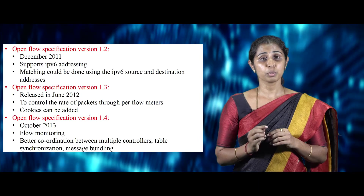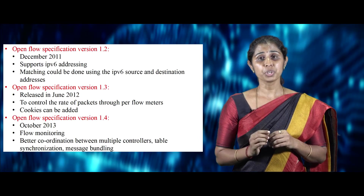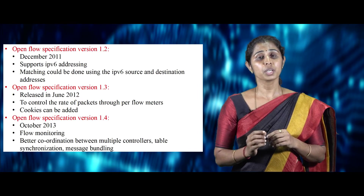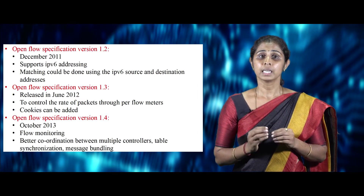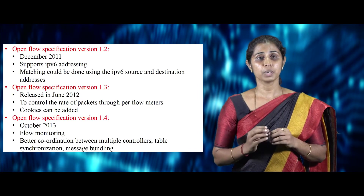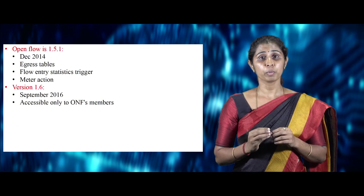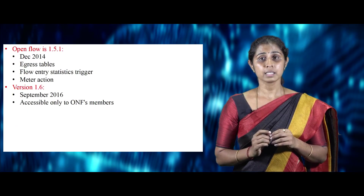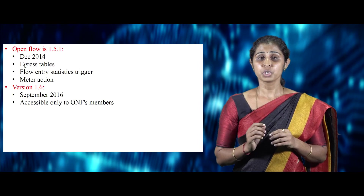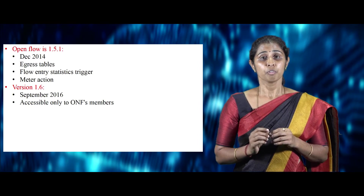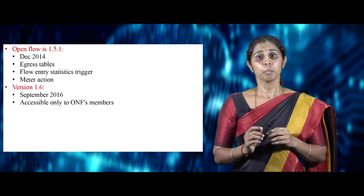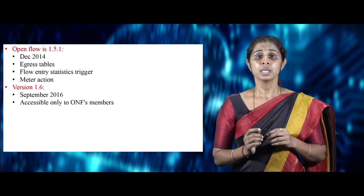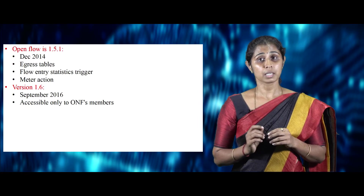Version 1.4 was released in October 2013, with main features including flow monitoring, better coordination between multiple controllers, table synchronization, and message bundling. The current version, OpenFlow 1.5, was released in December 2014 and includes features such as egress table, flow entry statistic trigger, and meter action. Version 1.6 has been available since September 2016 but is accessible only to ONF members.